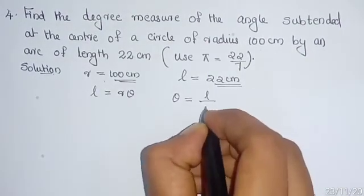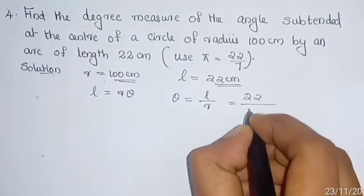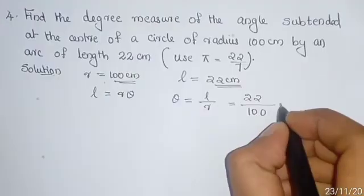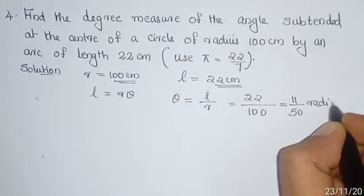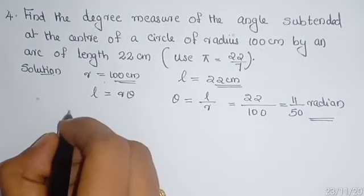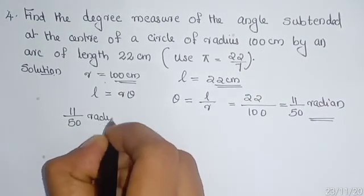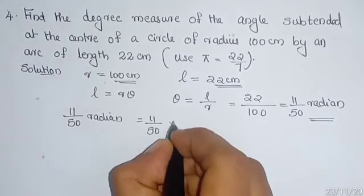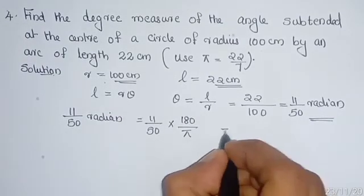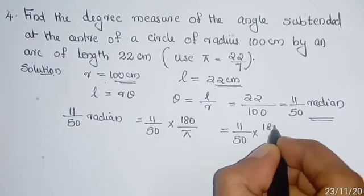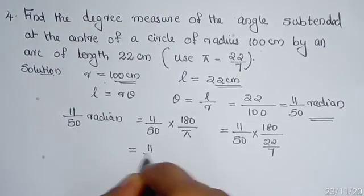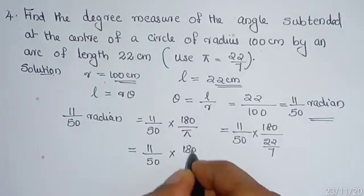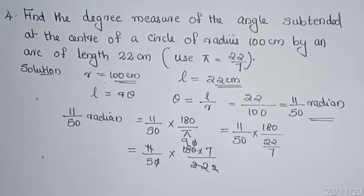Theta equals L divided by R, which is 22 divided by 100, equal to 11/50. This theta is in radians. We want to convert it to degrees. So 11/50 radians equals 11/50 multiplied by 180/π. Substituting π = 22/7 and calculating, we get 63/5 degrees.